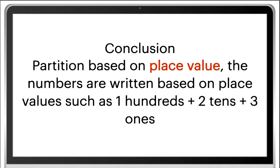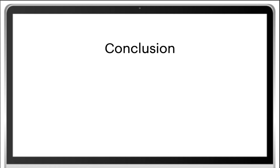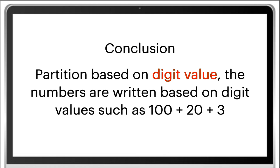Conclusion. Partition based on place value: the numbers are written based on place values, such as one hundreds plus two tens plus three ones. Partition based on digit value: the numbers are written based on digit values, such as one hundred plus twenty plus three.